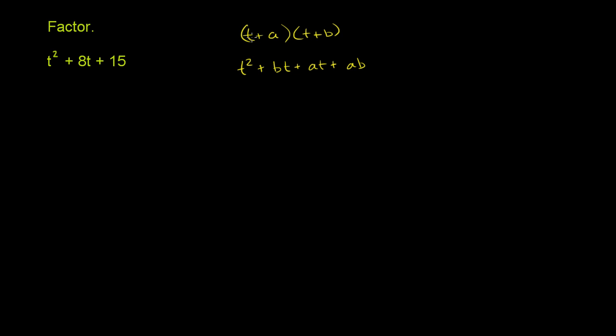We essentially multiplied every term here by every term over there. And then we have two t terms, this bt plus at. So we could combine those, and we get t squared plus a plus b times t, or b plus a times t, plus ab.